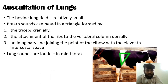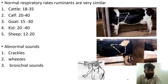Auscultation of Lungs. The bovine lung field is relatively small. Breath sounds can be heard in a triangle formed by: first, the triceps cranially; second, the attachment of the ribs to the vertebral column dorsally; and third, an imaginary line joining the point of the elbow with the 11th intercostal space. Lung sounds are loudest in the mid thorax.